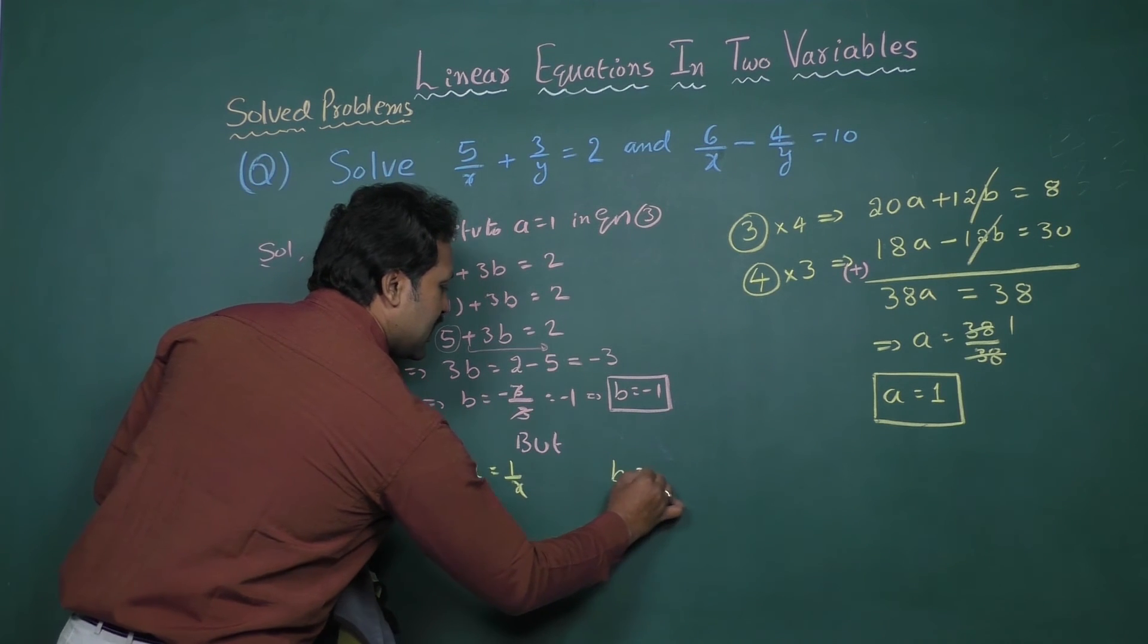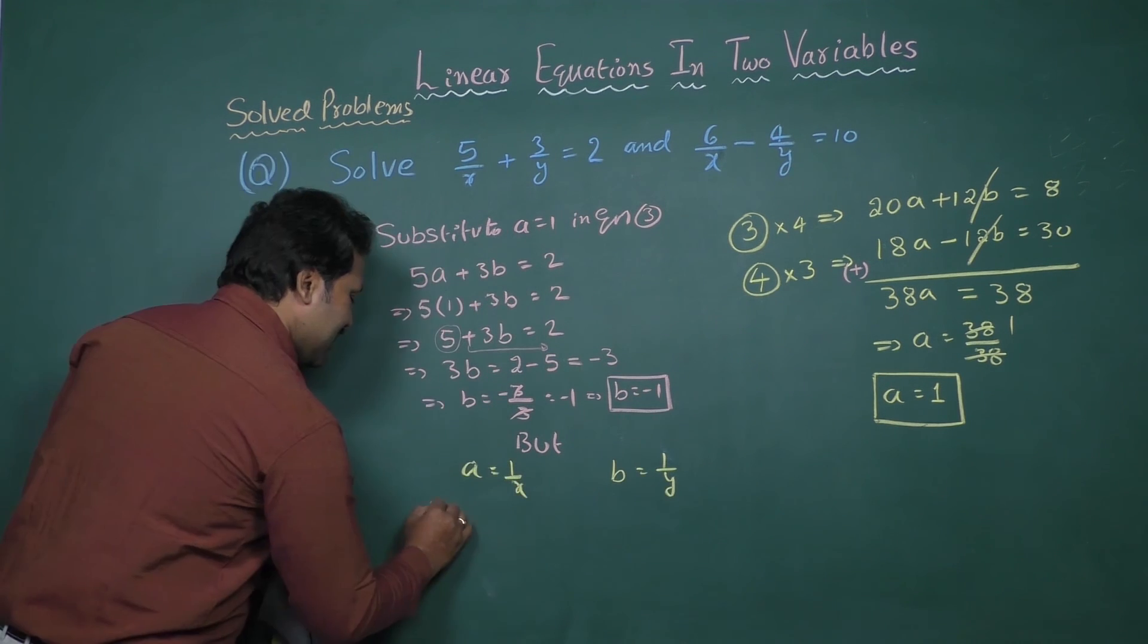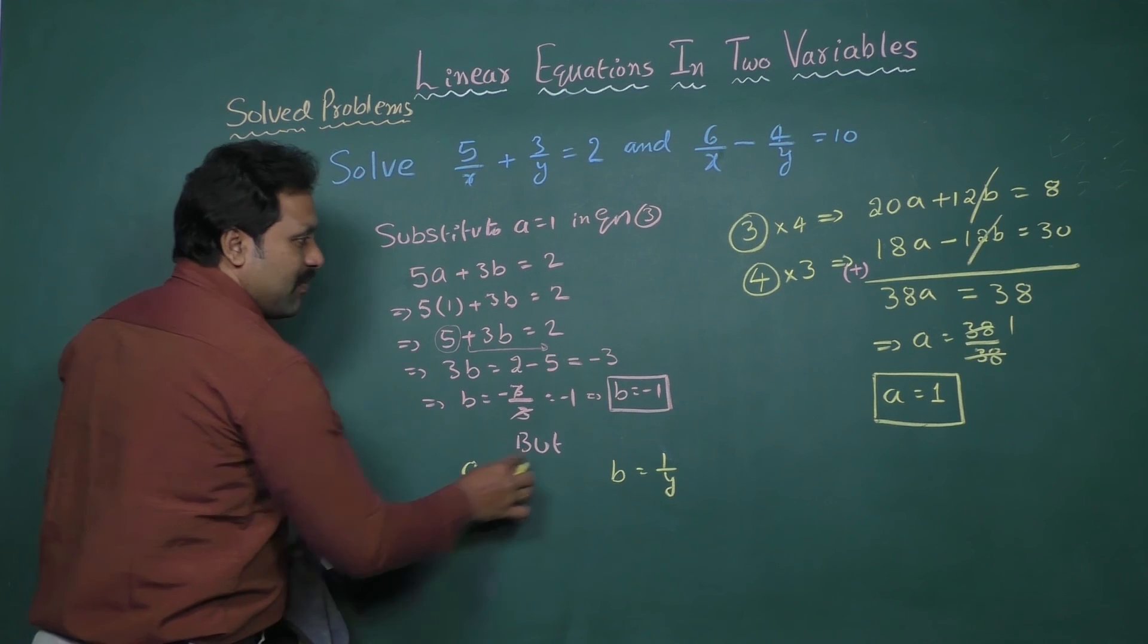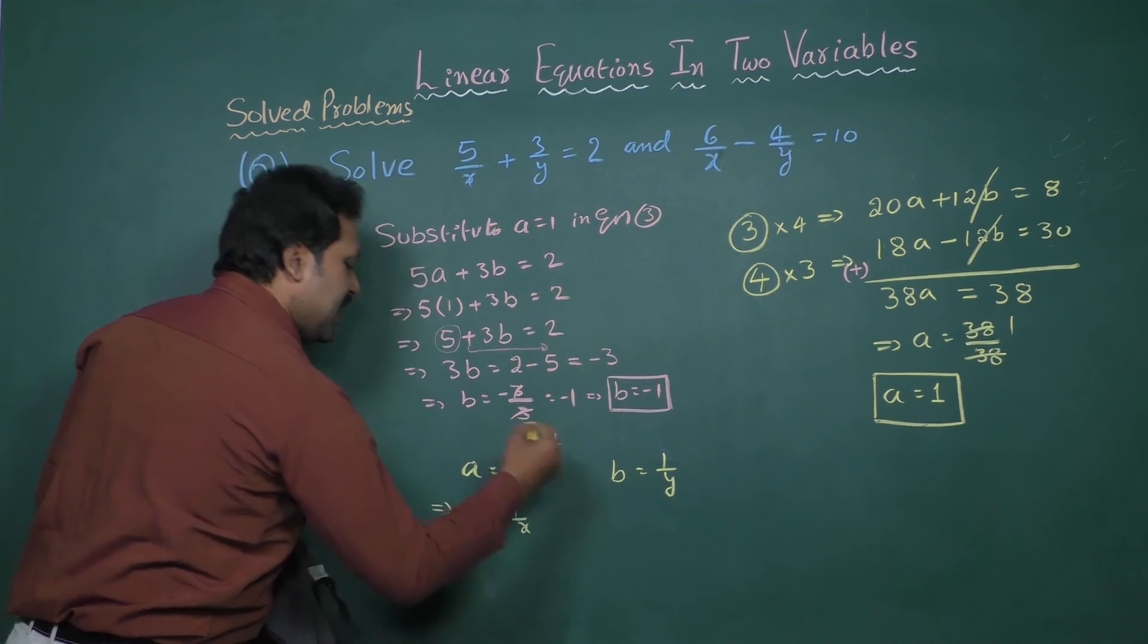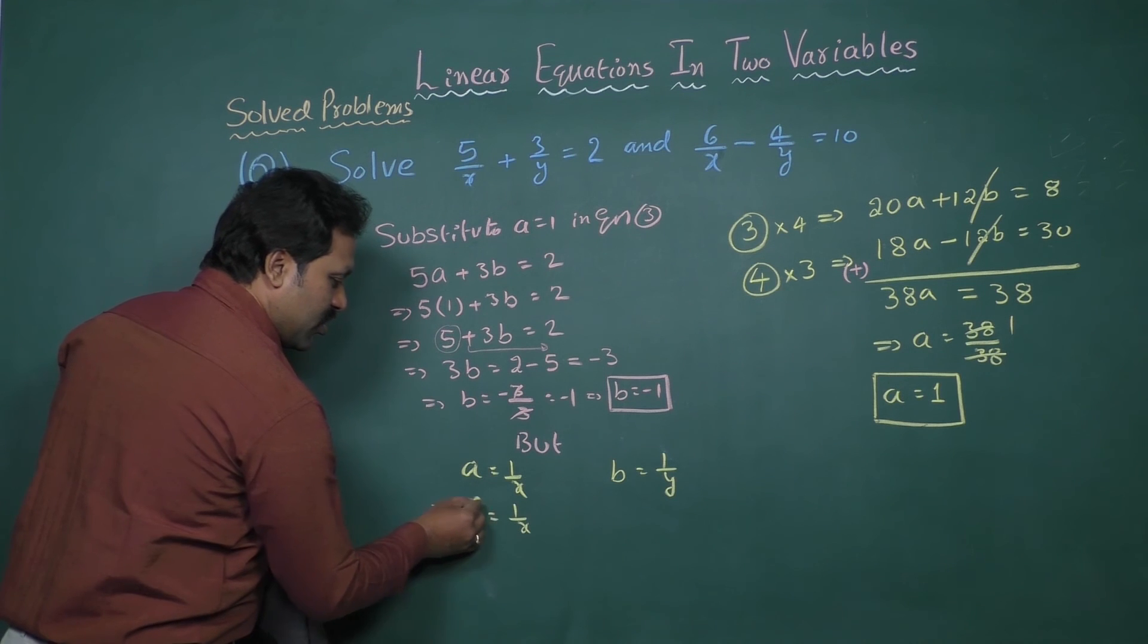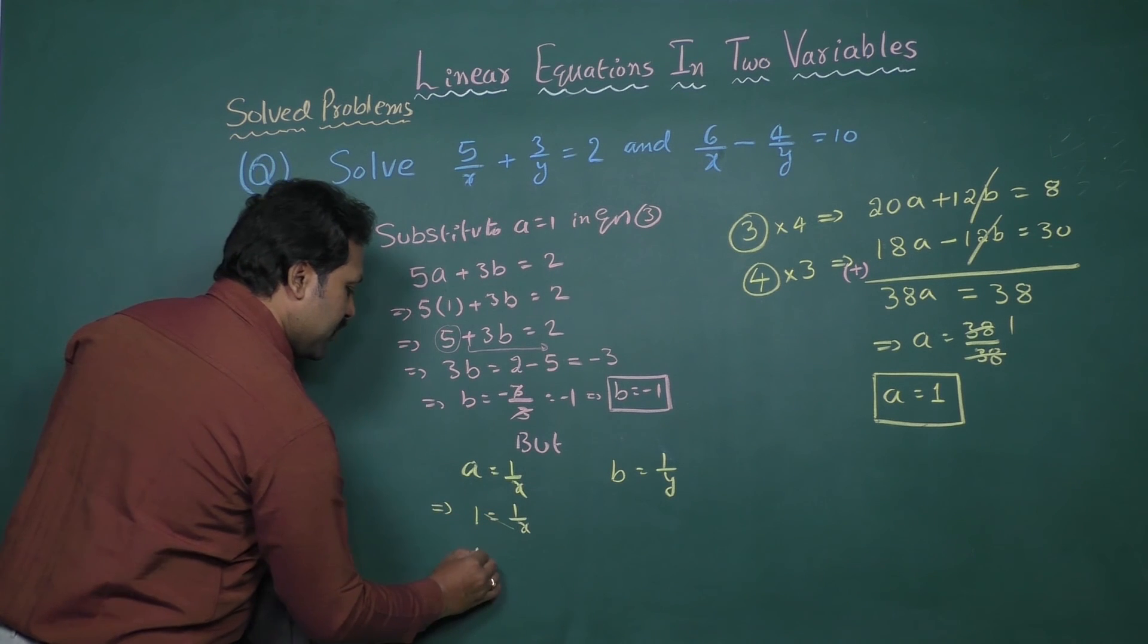b is 1 by y. That implies a value is 1. So 1 equal to 1 by x. Take cross multiplication. Then we get x equal to 1.